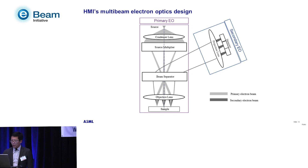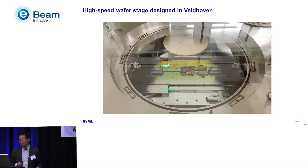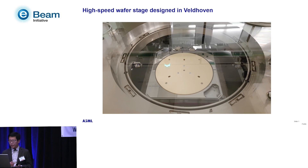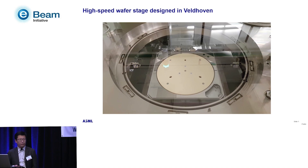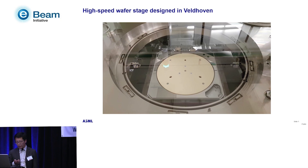Here is a short video on the high-speed wafer stage that is part of our multi-beam system. It was developed by our colleagues in Veldhoven, who know a thing or two about wafer stages. Even for ASML, there are additional technical challenges caused by the high vacuum and especially the high voltage requirements — carefully selecting materials and architectures to make sure we don't run into arcing, which is a key concern for every e-beam system.